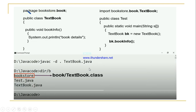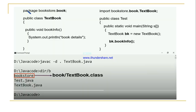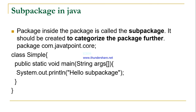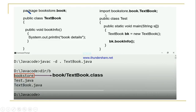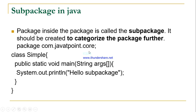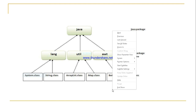We saw both built-in sub-packages — by exploring the SRC folder in the C drive — and user-defined sub-packages through the bookstore.book example. Thank you.